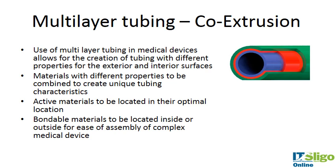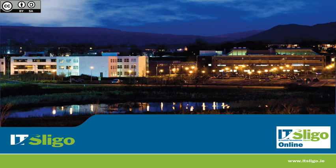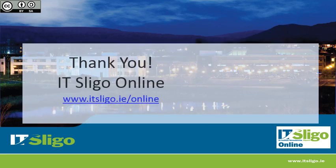In medical devices, multi-layer tubing is very common. This allows for creation of tubing with different properties for the interior and exterior surfaces — for example, the outside of the tubing may be hydrophilic and the inside hydrophobic, or vice versa. This means active materials can be located in their optimal position, and bondable materials placed inside or outside for ease of assembly of complex medical devices. That completes the section on extrusion.